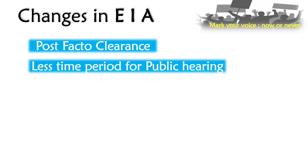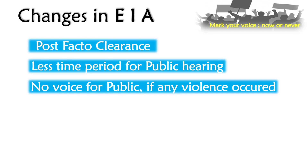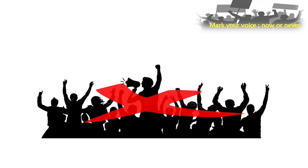The second change is a reduced time period for public hearing. Before this draft, the public hearing period was 30 days, but now it has been reduced to 20 days. The third change is no voice for the public if any violation occurs. If any company violates environmental rules, no public individual can file a complaint against that company. According to the new policy, only the company itself or government regulatory bodies can file a complaint.